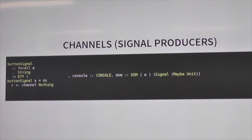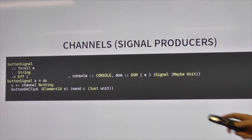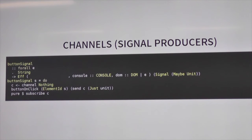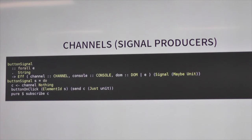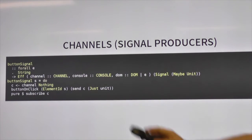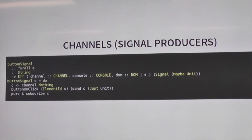The flip side to the signals are the channels — things that actually produce those values. A signal by itself would be pretty boring just streaming constants. We need an end of that signal to produce a value based on something from the outside world. We do this by creating a channel, which always has to start off with a value — often 'Nothing' — because you need to represent that initial state with the Maybe type. So we have a signal of Maybe Unit, and we'll get Just Unit every time the button is clicked. A channel needs to be turned into a subscription, so we subscribe to that channel and return our signal of Maybe Unit.